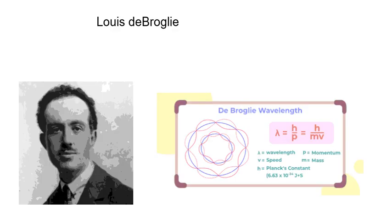At a famous conference, Louis de Broglie is the one who said that we have to treat an electron both as a particle and as a wave, and his wavelength equation is Planck's constant divided by momentum, or h over mv.